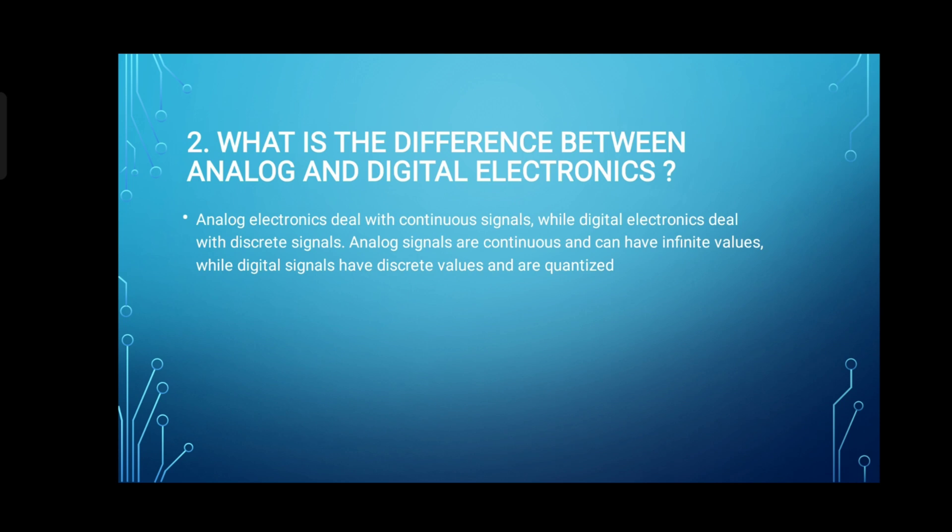2. What is the difference between analog and digital electronics? Analog electronics deal with continuous signals, while digital electronics deal with discrete signals. Analog signals are continuous and can have infinite values, while digital signals have discrete values and are quantized.